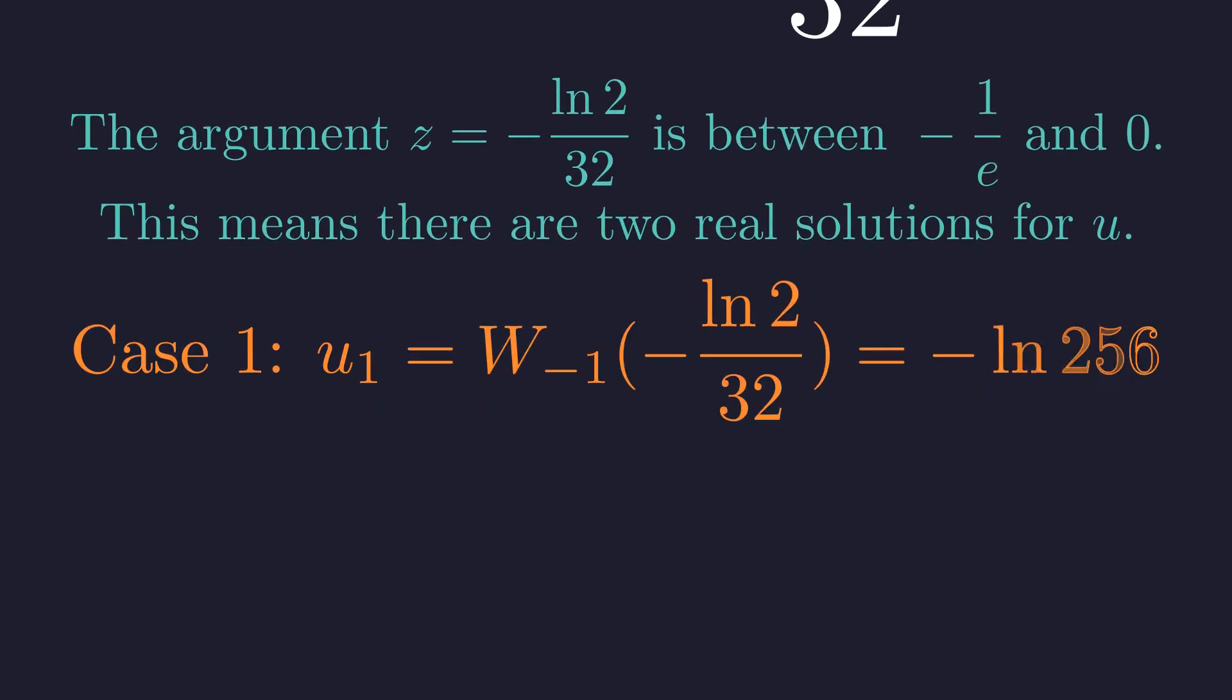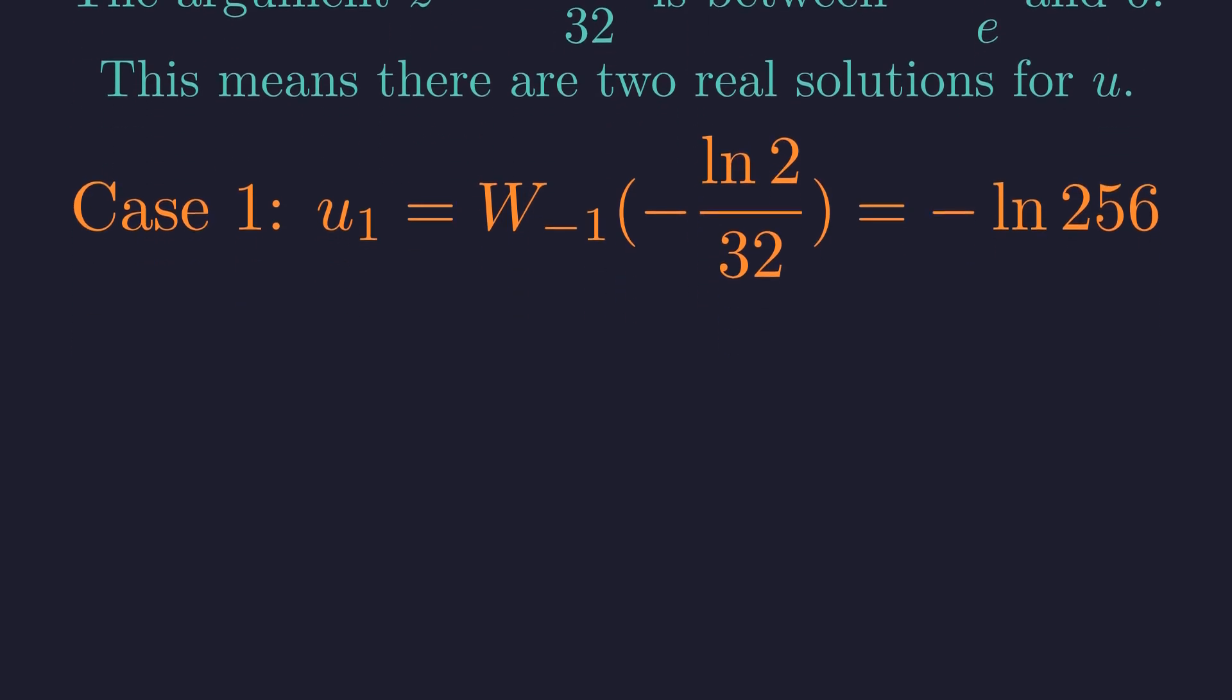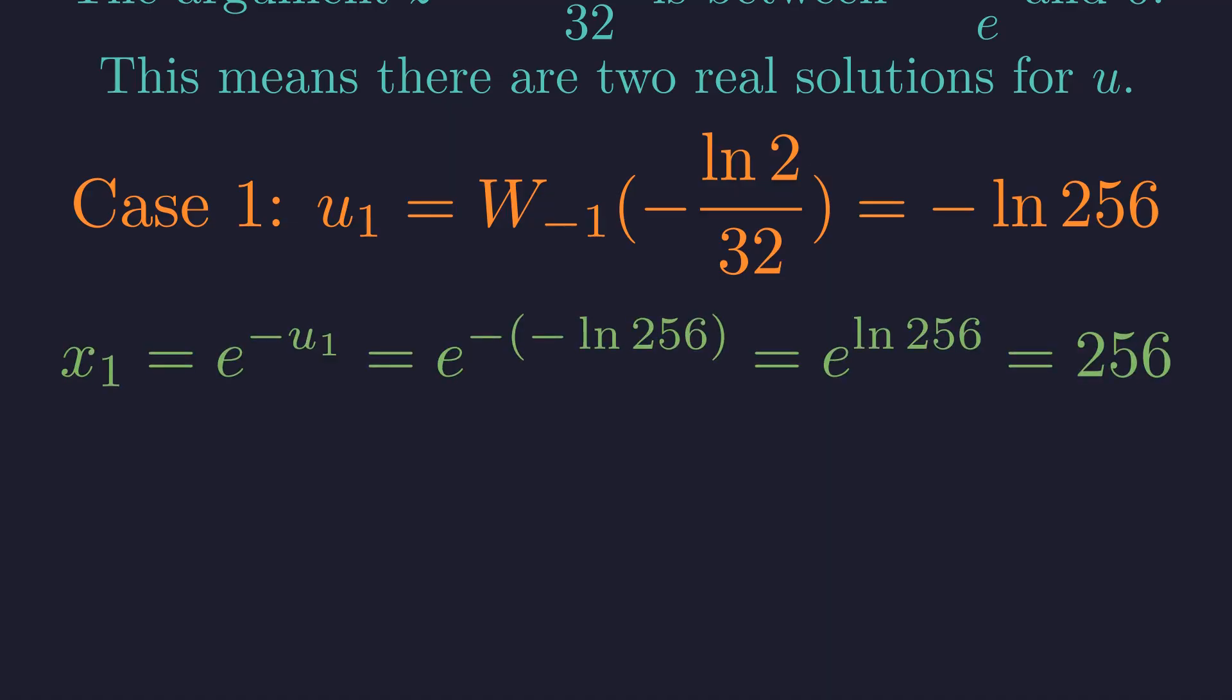The first solution comes from the w minus 1 branch. We can show that this value is exactly negative the logarithm of 256. Recalling that x equals e to the negative u, we substitute this value back, and it gives us x1 equals 256, confirming our first solution.